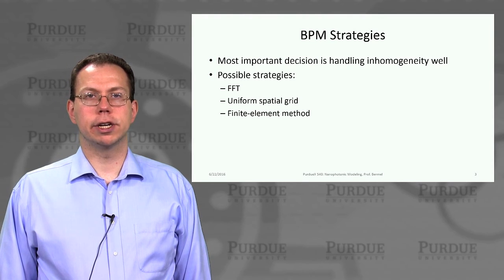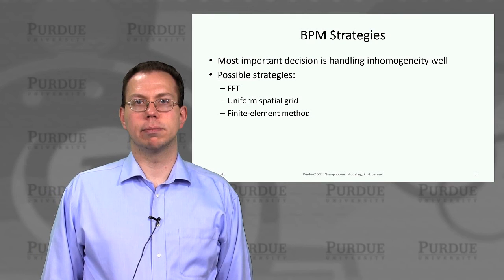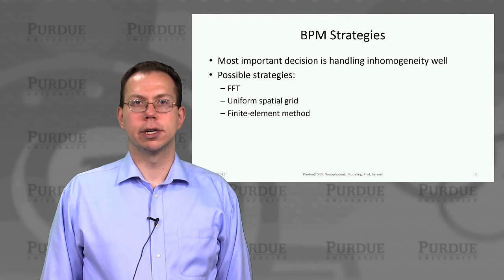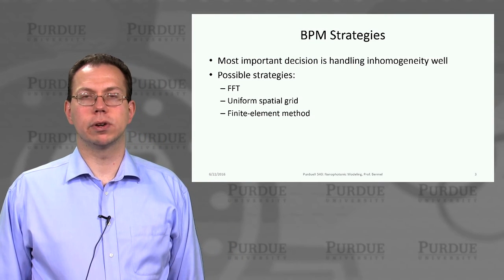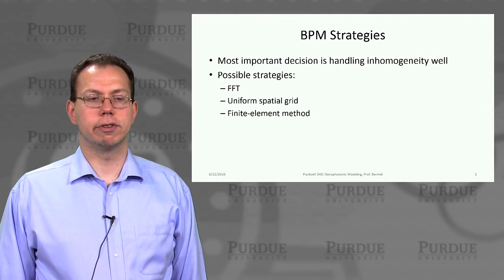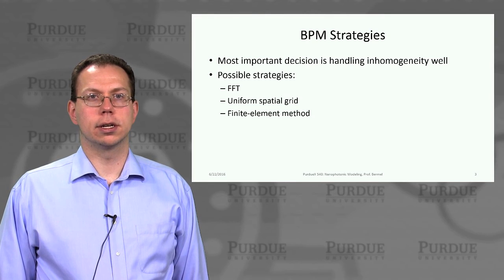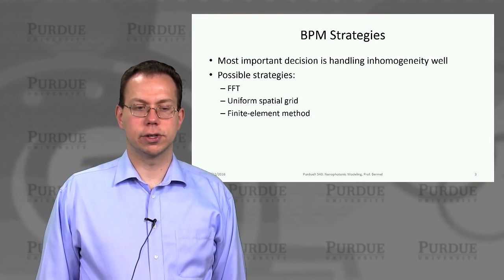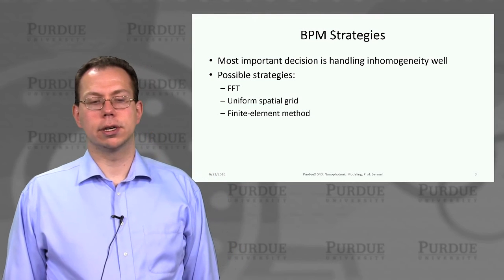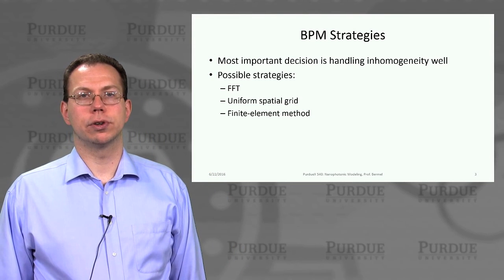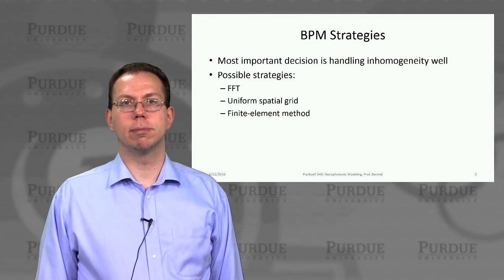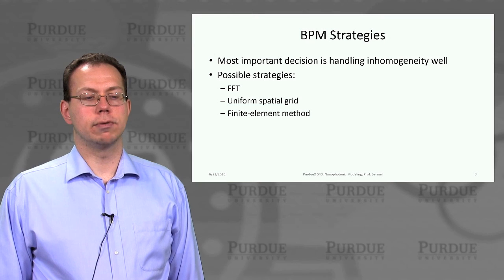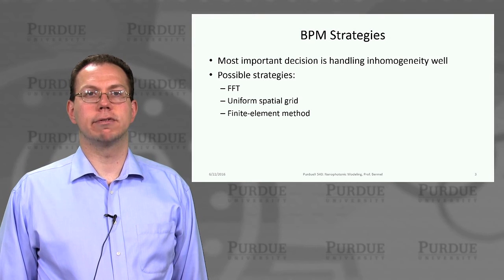Of course, the biggest challenge for this sort of method is not something as simple as a very uniform fiber which is just propagating forever, but when you have some sort of inhomogeneity or non-trivial physics in the problem — in particular if the lateral features include non-linearity or a non-trivial structure in the x and y directions. There are a few different ways we could try to handle it: one would be a uniform spatial grid, analogous to what we did with finite difference time domain just in 2D; we could also do fast Fourier transform; and finally the finite element method, which we haven't talked about before but will explain in more detail.